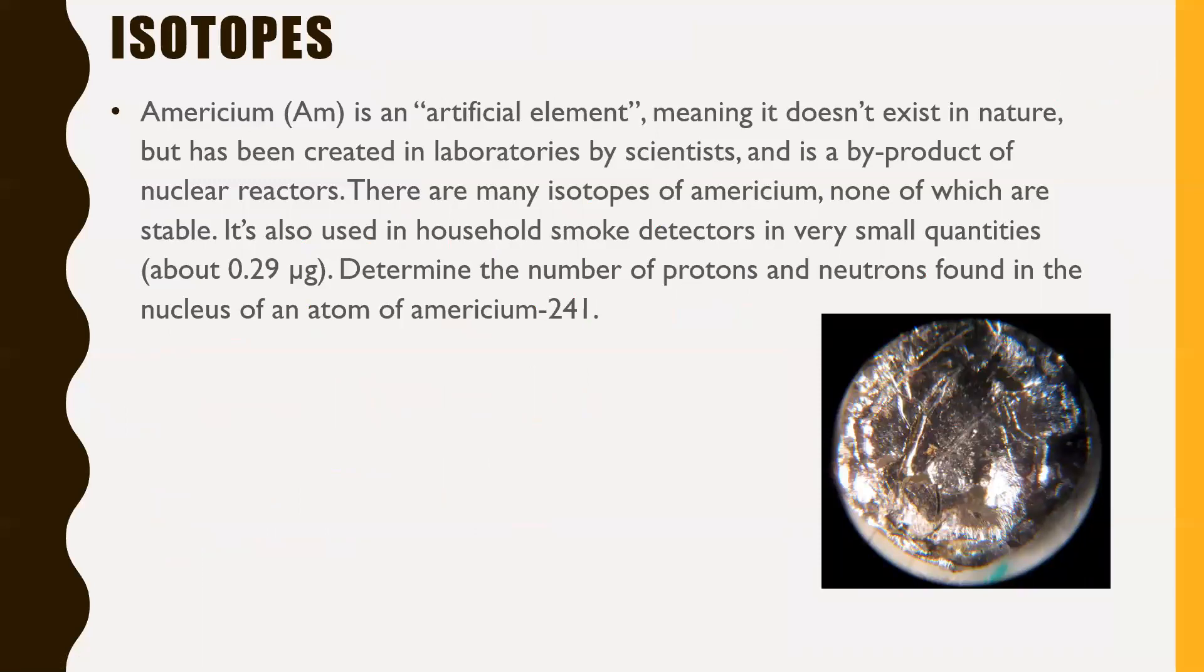All right, next one. This one is a little simpler, but really interesting nonetheless. Isotopes. Americium, I think is how you pronounce that. The chemical symbol for that is AM. It's an artificial element, meaning it doesn't exist in nature. Nowhere, nowhere in nature does this thing naturally exist. At least not that we found, at least not on earth. But it has been created in laboratories by scientists, and it's actually a byproduct of nuclear reactors. Kind of interesting.